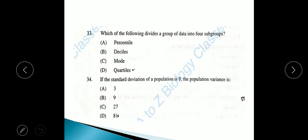Question 33: Which of the following divides a group data into 4 subgroups? So 4 means quarter. The answer is D, quartiles, means it divides into 4 subgroups: group 1, 2, 3 and 4, that is quartile.